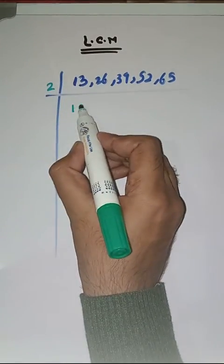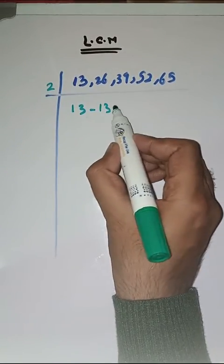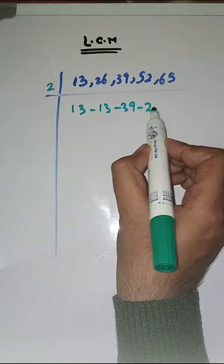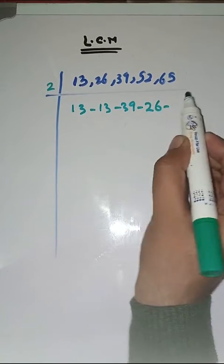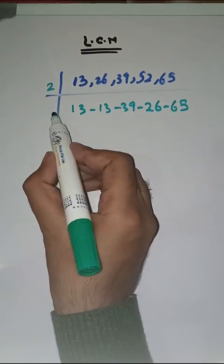We start with 2. 13 as it is. 2, 1s are 2. 2s are 6. 39 as it is. 2, 2s are 4. 2s are 12. 65 as it is.